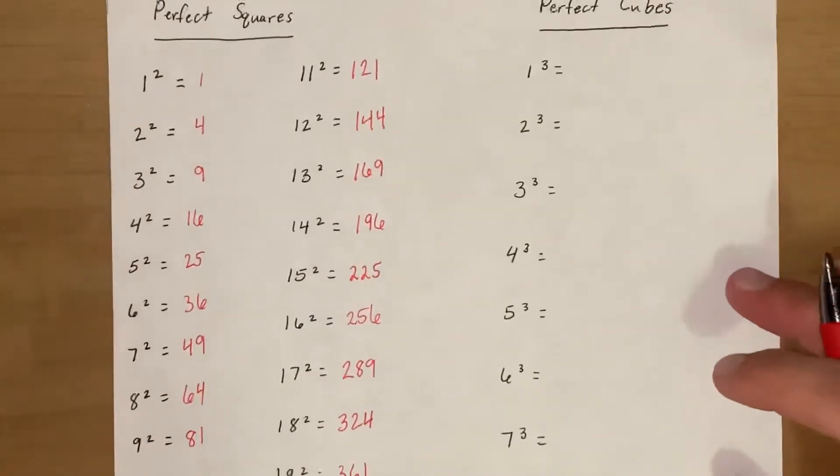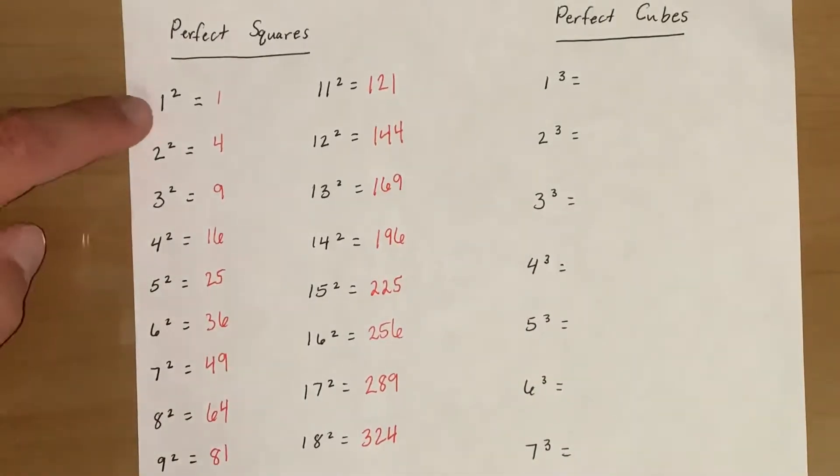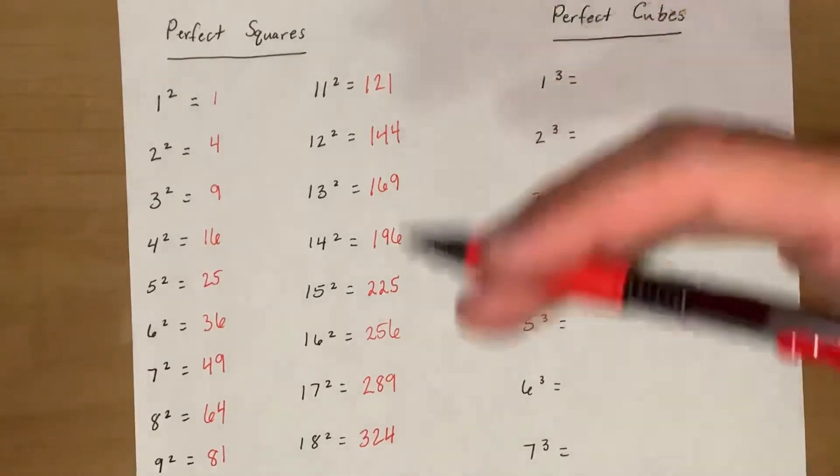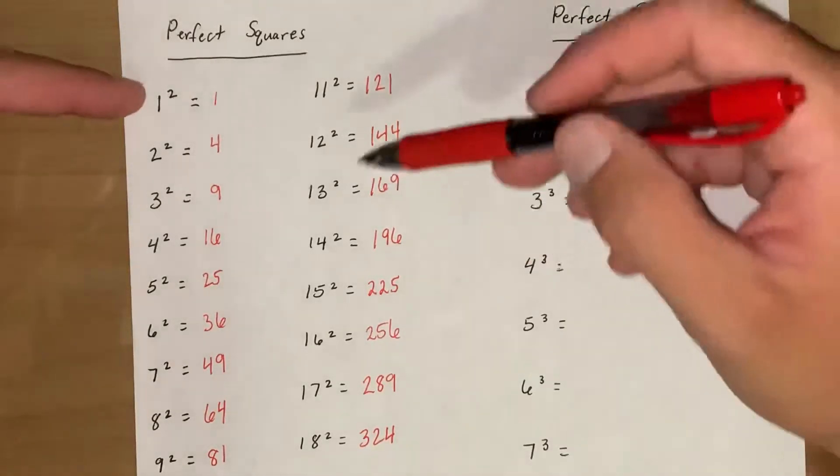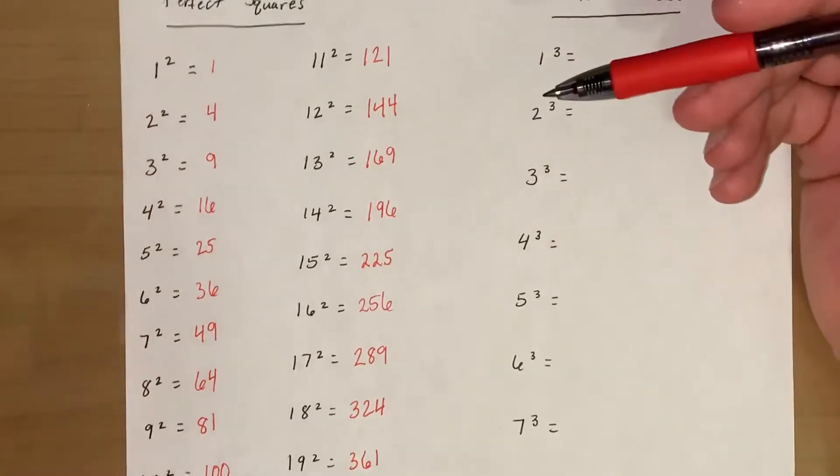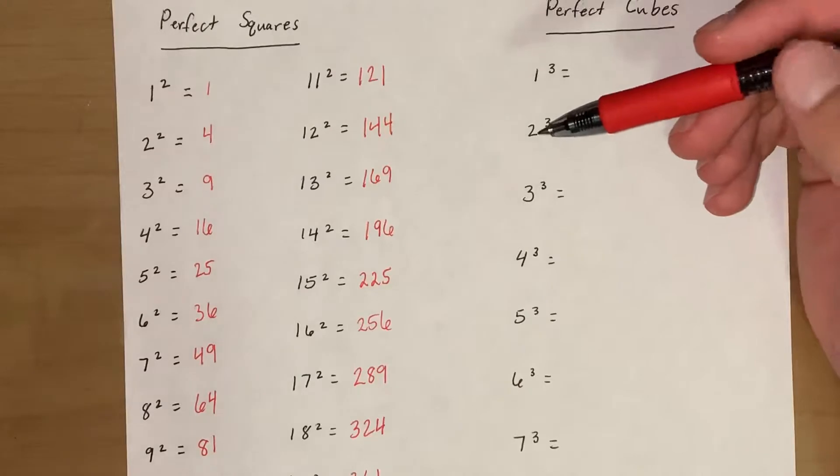All right so let's look at these perfect squares real quick. So we know that for a perfect square that means an exponent of 2, that means 1 times 1. Remember this 1 is our base and this 2 is our exponent. Some good ways to memorize these, I think 1 through 12 we should have those memorized because that's our times tables we've been working on since third grade probably. We usually go through our 12s.